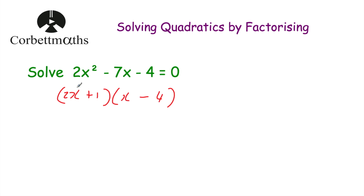Let's check: 2x × x = 2x²; 2x × -4 = -8x; 1 × x = x; so -8x + x = -7x — fantastic. And 1 × -4 = -4. So we've factorized that quadratic as (2x + 1)(x - 4) = 0. Some people use the split-in-the-middle technique to factorize and that's totally fine. In this video I'm focusing on inspection, but the split-in-the-middle technique works just as well.